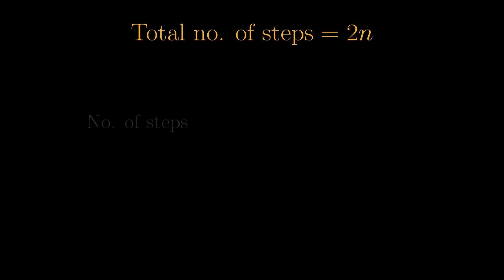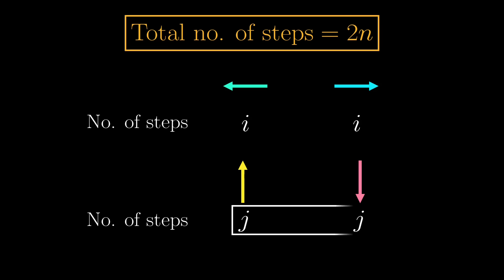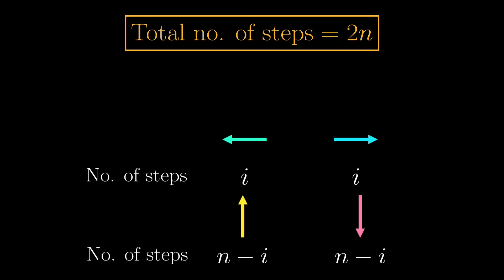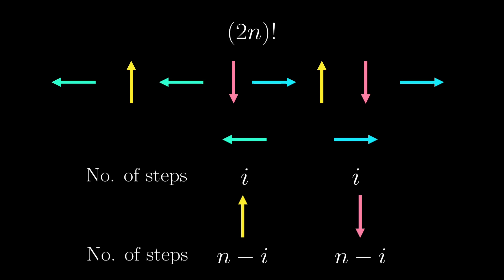For a total of 2n steps, a return path should have the same number of steps to the left and to the right, and the number of steps upwards is the same as downwards. Because the total number of steps is 2n, we can express j in terms of i. For a return path, we can imagine it as a sequence of moves. Because there are a total of 2n steps, in total, there are 2n factorial arrangements of these moves.